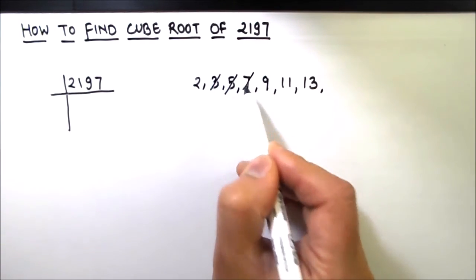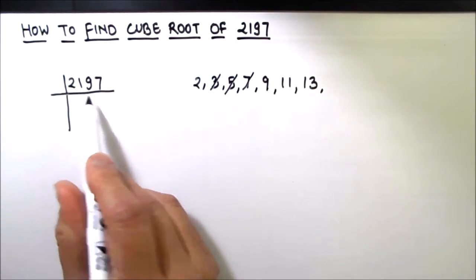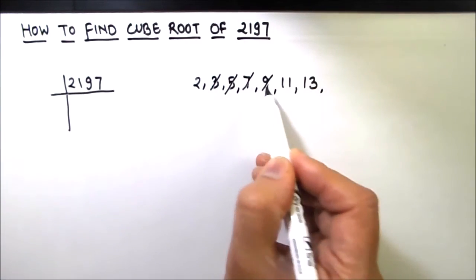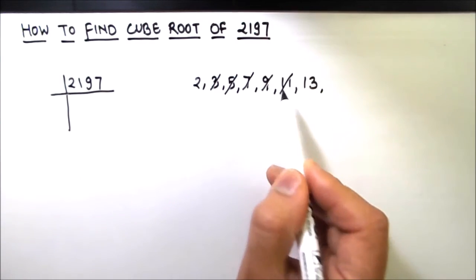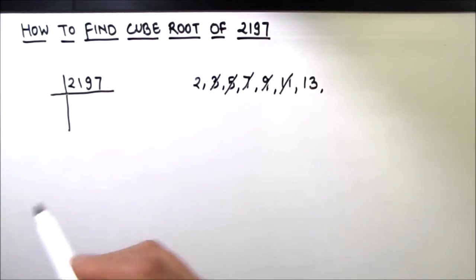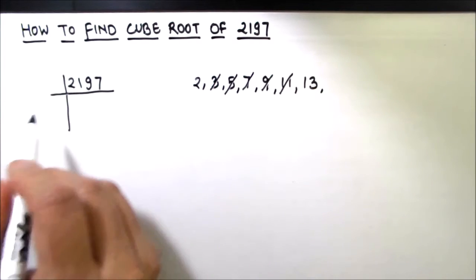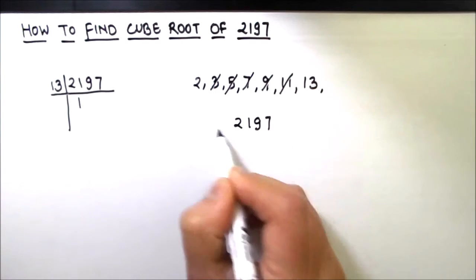It is not going by 7 either. Let's try 9. 9 is not a factor of this number, and 11 is also not the factor of this number. So the factor of this number is 13. I will divide this number here by 13.